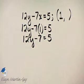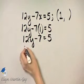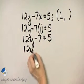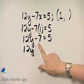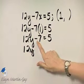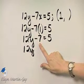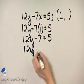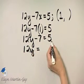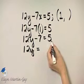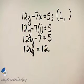Let's add 7 to both sides. So I have 12y. If I add 7 to the left side, I have minus 7 plus 7, which is 0, so I'll just have 12y. If I add 7 to the right side, I have 5 plus 7, or 12.